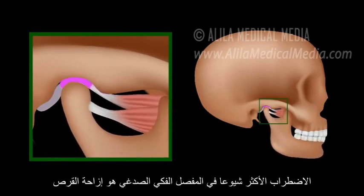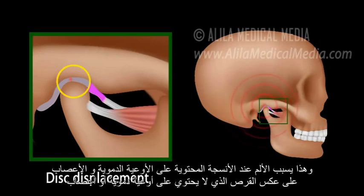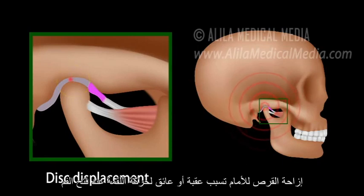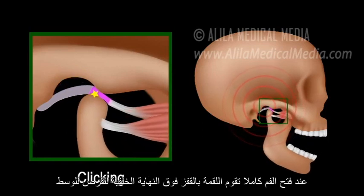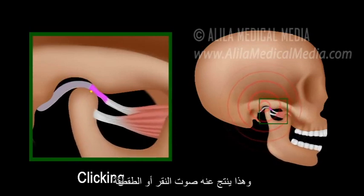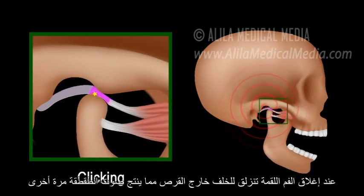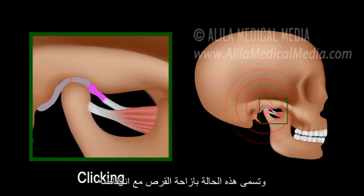The most common disorder of the TMJ is disc displacement, and in most cases the disc is dislocated anteriorly. As the disc moves forward, the retrodiscal tissue is pulled in between the two bones. This can be very painful as this tissue is fully vascular and innervated, unlike the disc. The forward dislocated disc forms an obstacle for the condyle movement when the mouth is opening. In order to fully open the jaw, the condyle has to jump over the back end of the disc and onto its center, producing a clicking or popping sound. Upon closing, the condyle slides back out of the disc, hence another click or pop. This condition is called disc displacement with reduction.